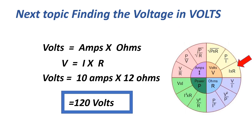The next formula for voltage: volts equals amps times ohms, or V equals I times R. Equals 10 times 12, equals 120 volts.